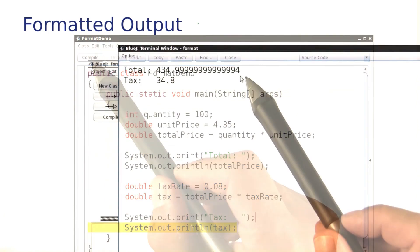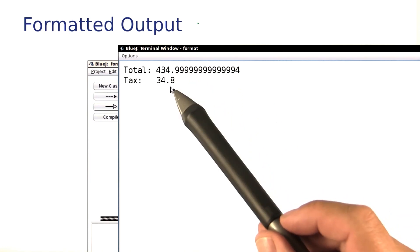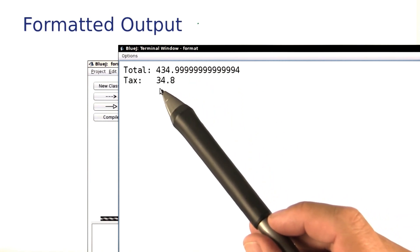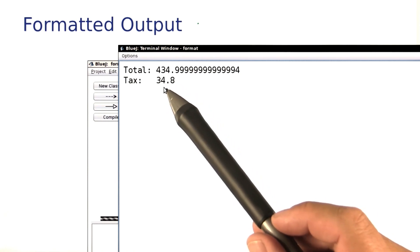Let's see what this program does. Well, look at it. It's ugly, ugly. Here, I expected to see $435, and the tax, you never see tax like that on your store receipt. It would say $34.80.